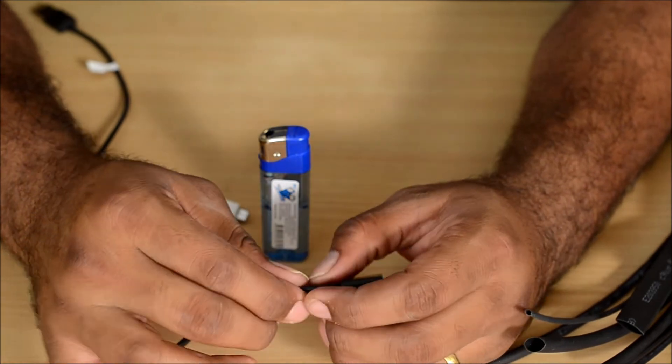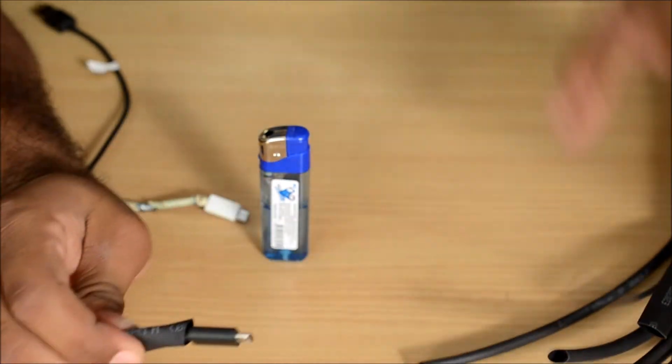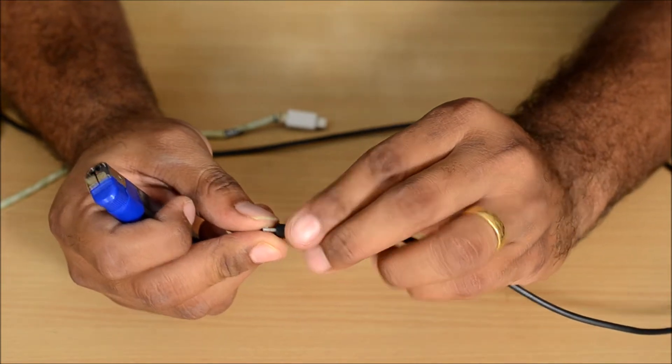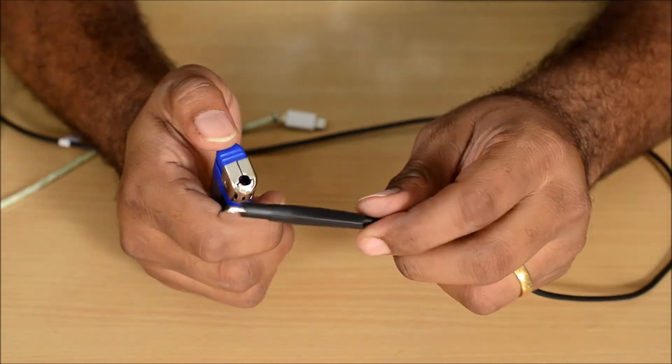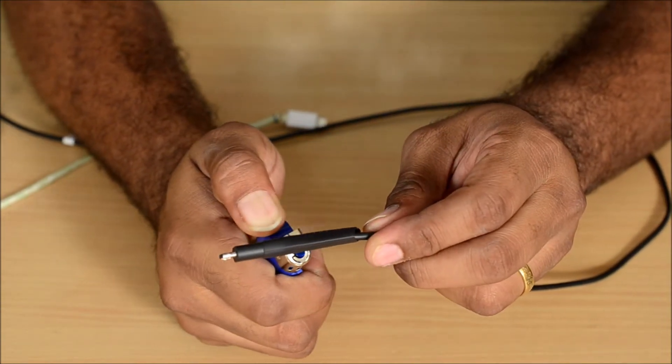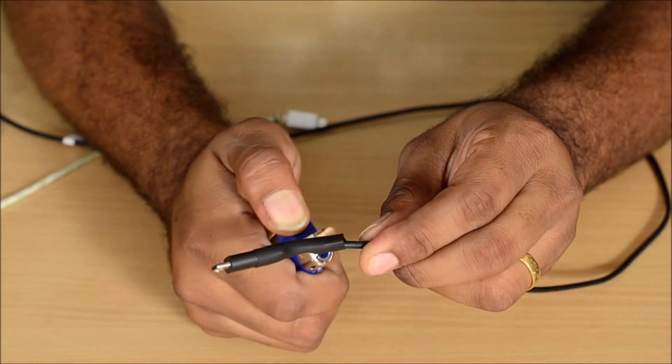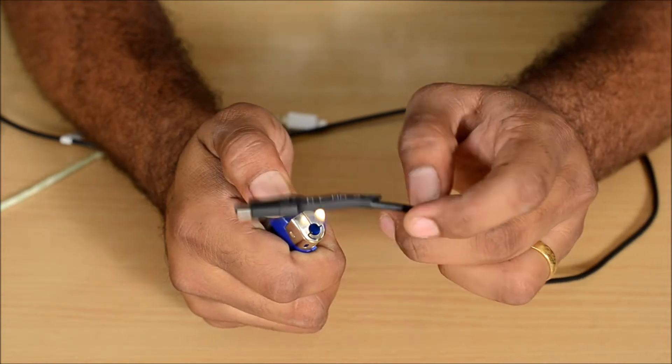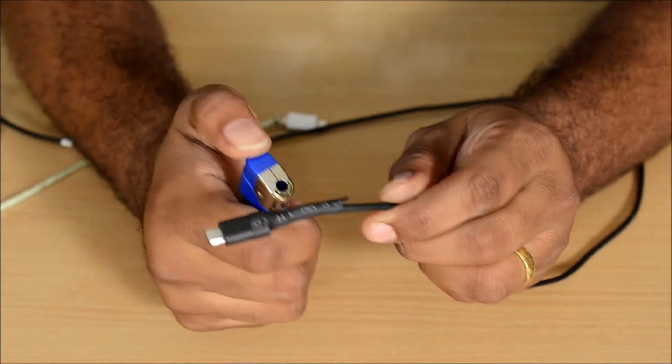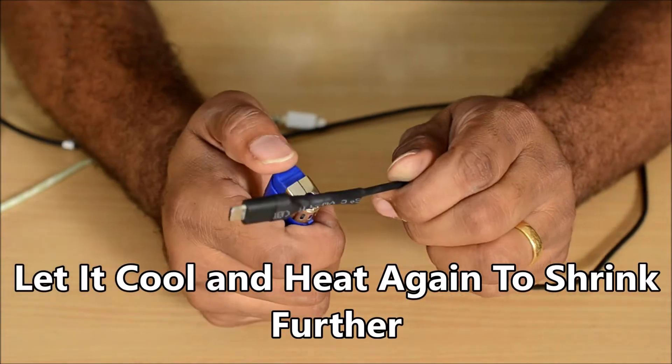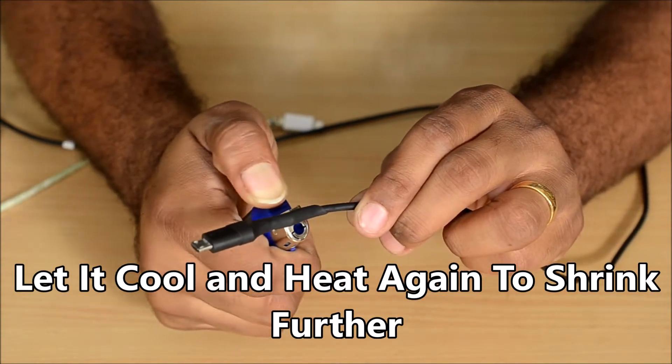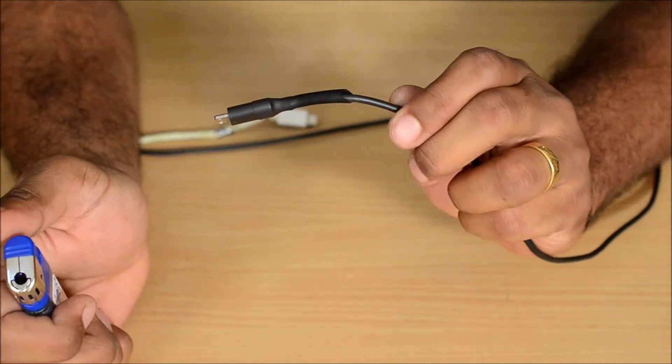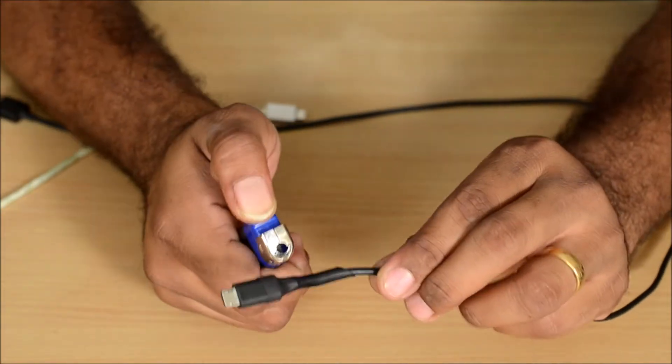So now all you need to do is take a lighter and just heat slowly, insert a little bit onto the charging pin, and heat it evenly. Don't put the flame for a long time. It may burn the cable.